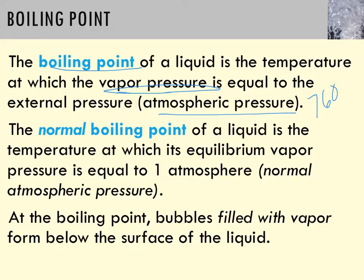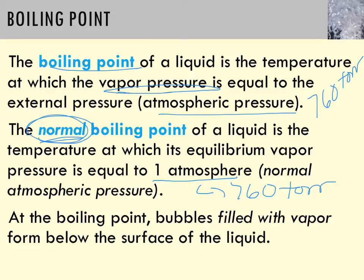The boiling point of a liquid is the temperature at which the vapor pressure equals atmospheric pressure, 760 torr. When you see 'normal boiling point,' that means under normal conditions of 1 atmosphere, or 760 torr. If you're at a different pressure — say 1.2 atmospheres — the boiling point changes. That's why at a place like Denver with low atmospheric pressure, water might boil at 92°C rather than 100°C. Boiling point is dependent on the pressure at which you're measuring.